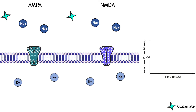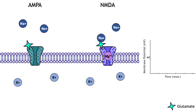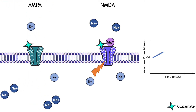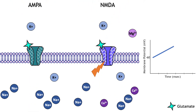The NMDA receptor requires the binding of glutamate to open, but it is also dependent on voltage. When the membrane potential is below, at, or near rest, a magnesium ion blocks the open NMDA receptor and prevents other ions from moving through the channel. Once the cell depolarizes, the magnesium block is expelled from the receptor, which allows sodium, potassium, and calcium to cross the membrane. The voltage change needed to open the NMDA receptor is usually a result of AMPA receptor activation. Released glutamate binds to both AMPA and NMDA receptors. Sodium influx occurs through open AMPA channels, which depolarizes the cell enough to expel the magnesium ion and allow ion flow through the NMDA receptors.